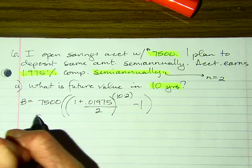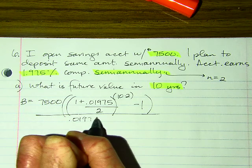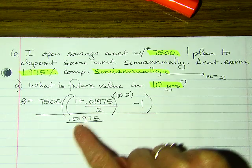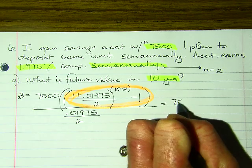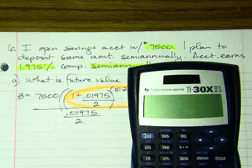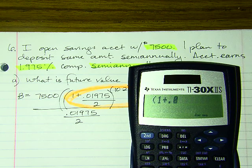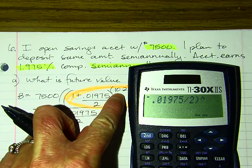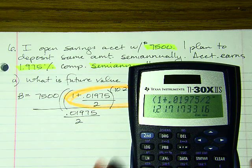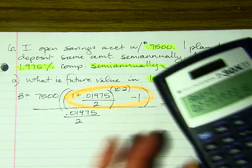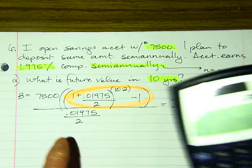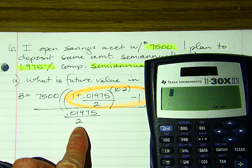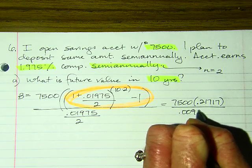Balance = 7,500 × [(1 + 0.01975/2)^(10×2) − 1] / (0.01975/2). I enter: (1 + 0.01975/2)^20, then subtract 1, getting approximately 0.21717. For the bottom: 0.01975 ÷ 2 = 0.009875.